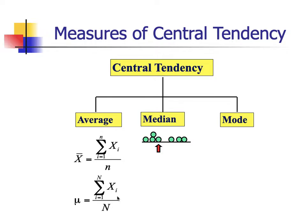If the data is taken from the sample, we make use of what we refer to as a statistic. The statistic used is x-bar for our sample mean. The concept is the same, however we differ in notation. We use the summation of all x sub i's, where i ranges from 1 up to small n, indicating our sample size. Once we have added all sample data values, we divide by the sample size, denoted by small n.